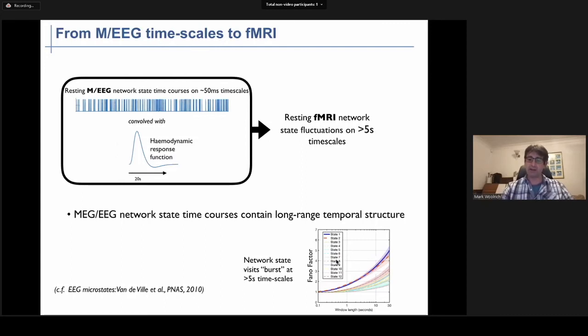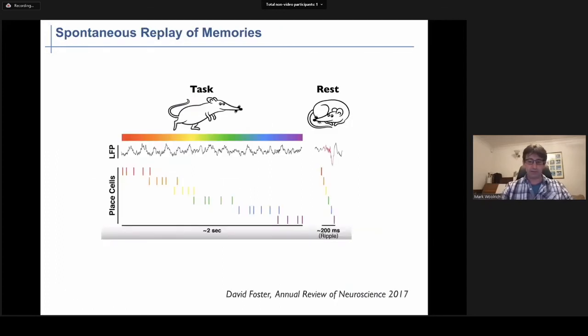As I mentioned before, this can only be true if there is long range temporal structure in these MEG, EEG network state time courses such that that long range temporal structure survives the low-pass filtering of the HRF. Indeed we can directly go looking for this long range temporal structure by using certain measures. For example, here we've used the Fano factor, which captures the extent to which state visits in the MEG network state time courses burst or cluster in time at long fMRI timescales. And that's indeed what they do.